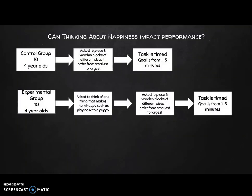Now let's look at the new version. Control group and experimental group, 10 children in each group, four year olds. In the control group, they were asked to place eight wooden blocks of different sizes in order from smallest to largest, and the task is timed. The goal is from one to five minutes. By adding the details of eight wooden blocks, different sizes, and a specific task of ordering from smallest to largest, with a goal of one to five minutes, I now make it much more likely that somebody could replicate my study. Whether or not that leads to flawed outcomes isn't the point — if I wanted to replicate this study, I absolutely need those same instructions.